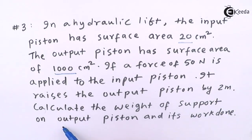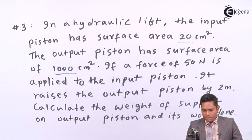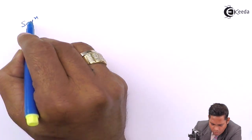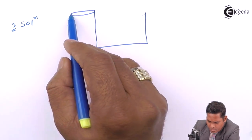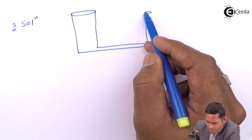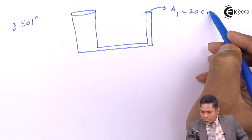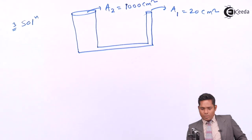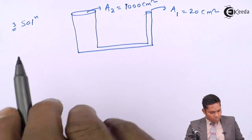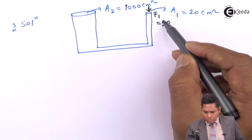The output piston rises by 2 meters, supporting the weight on the output piston. We have to find the force experienced on the output side of the piston. The situation is: wider area A2 and smaller area of cross-section A1 equals 20 centimeters square, A2 equals 1000 centimeters square, and F1 equals 50 newtons.